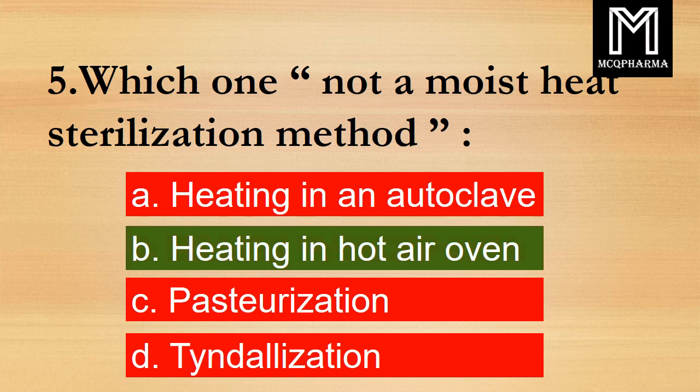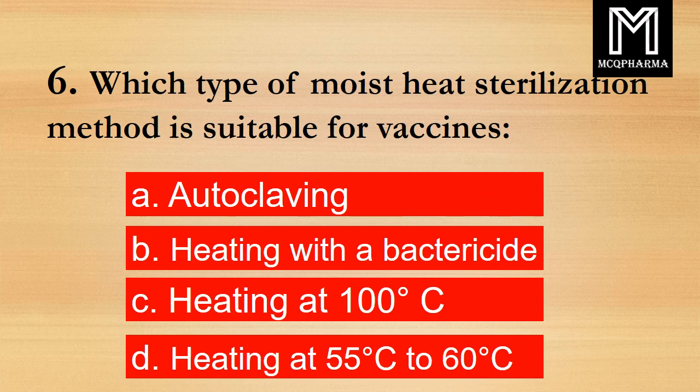Question number 6. Which type of moist heat sterilization method is suitable for vaccines? Option A: Autoclave. B: Heating with a bactericide. C: Heating at 100 degree Celsius. D: Heating at 55 to 60 degree Celsius. Correct answer: Option D, Heating at 55 to 60 degree Celsius.